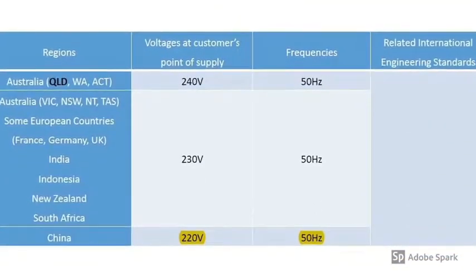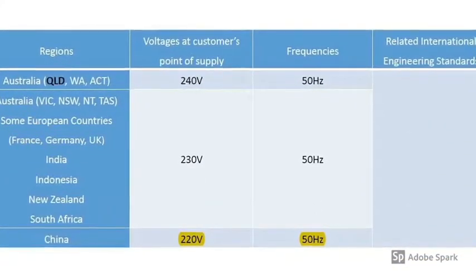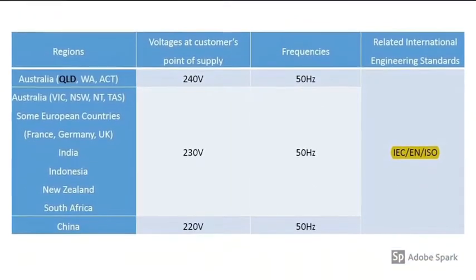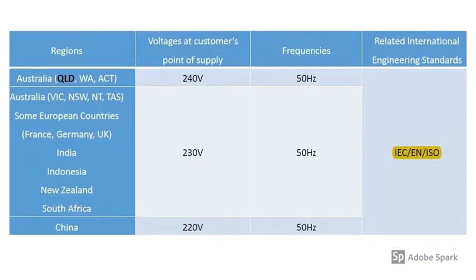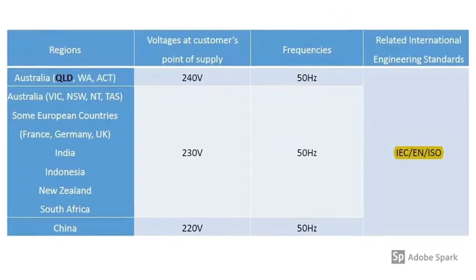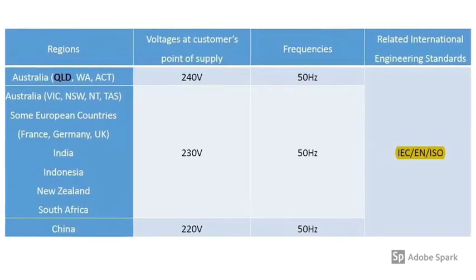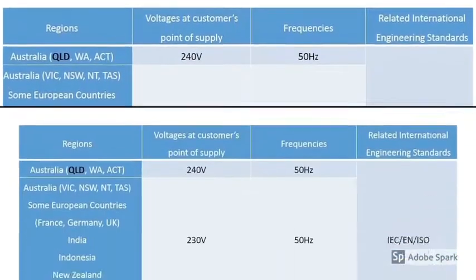China has 220 volt 50 hertz electricity supply. These regions have 50 hertz electricity supply, and their national standards often relate to the European standards.